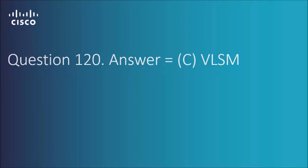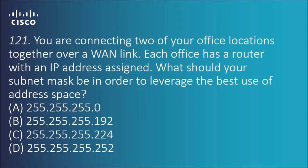Question 121: You are connecting two of your office locations together over a WAN link. Each office has a router with an IP address assigned. What should your subnet mask be in order to leverage the best use of address space?